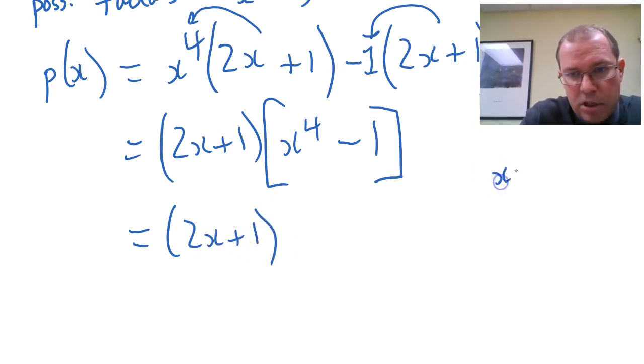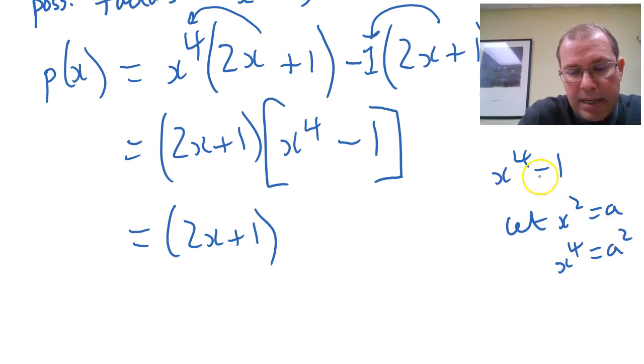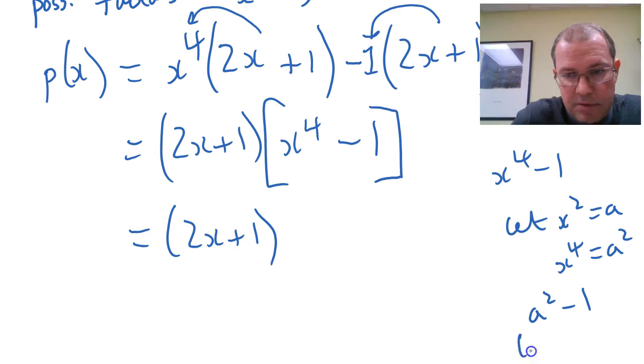So of course, x to the 4 minus 1, if I just do this on the side here, if I let x squared equals a, then x to the 4 is a squared, and you can see x to the 4 minus 1 would be a squared minus 1. Well, a squared minus 1, of course, factors to a plus 1 times a minus 1.